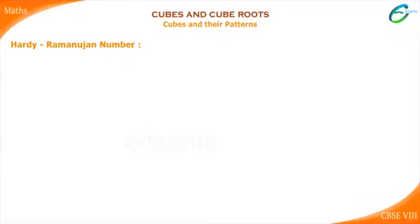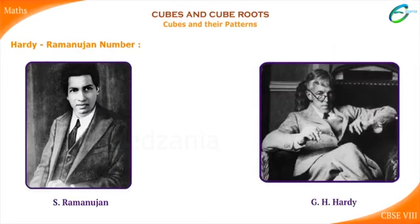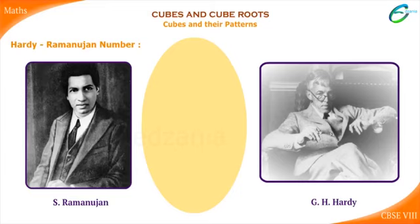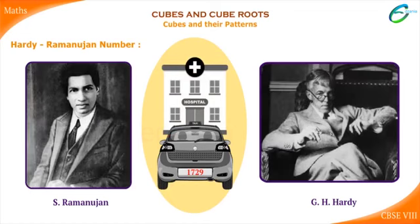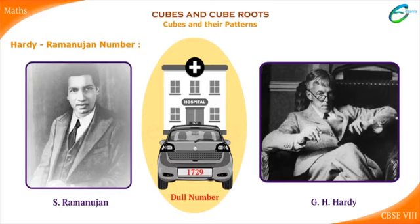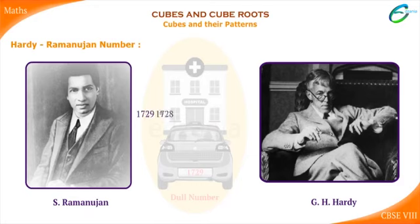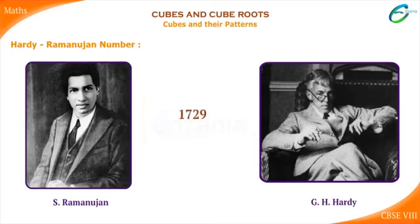There is a story about one of the greatest Indian mathematicians, S. Ramanujan, and another famous mathematician, G. H. Hardy. This story is related to one cube number. Professor G. H. Hardy called 1729 a dull number. Once Hardy went to see Ramanujan in hospital in a taxi numbered 1729. He mentioned to Ramanujan that it's a dull number. Ramanujan quickly pointed out that 1729 was indeed interesting — it is the smallest number that can be expressed as a sum of 2 cubes in 2 different ways. Therefore 1729 is known as the Hardy-Ramanujan number.